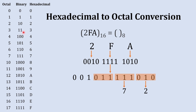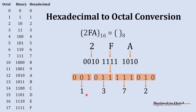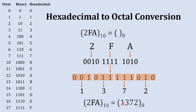The next set is 011 — that is 3. The final set is 001 — that is 1. Combining all of these together, we get 1372 as the octal equivalent to the hexadecimal number 2FA.